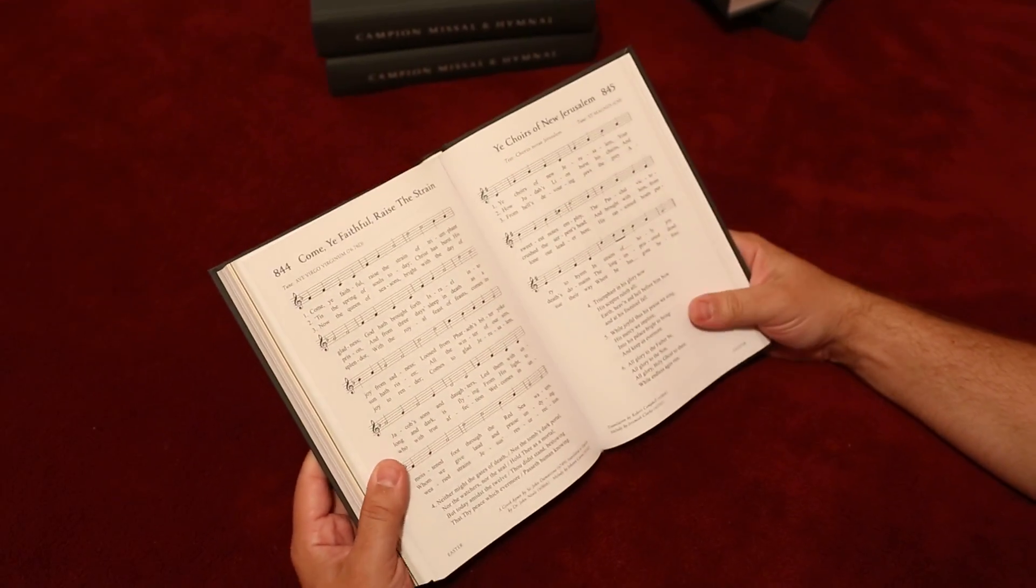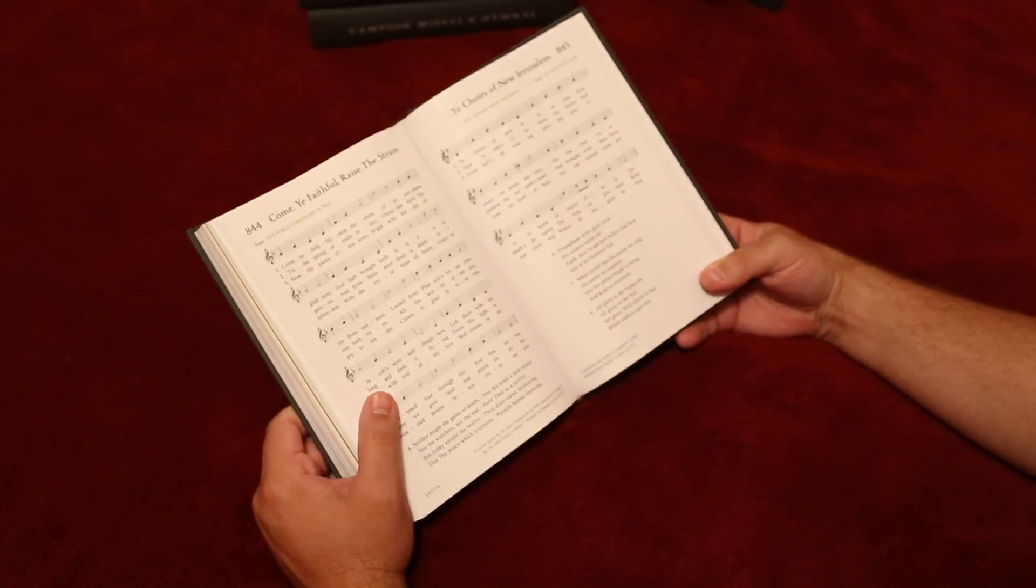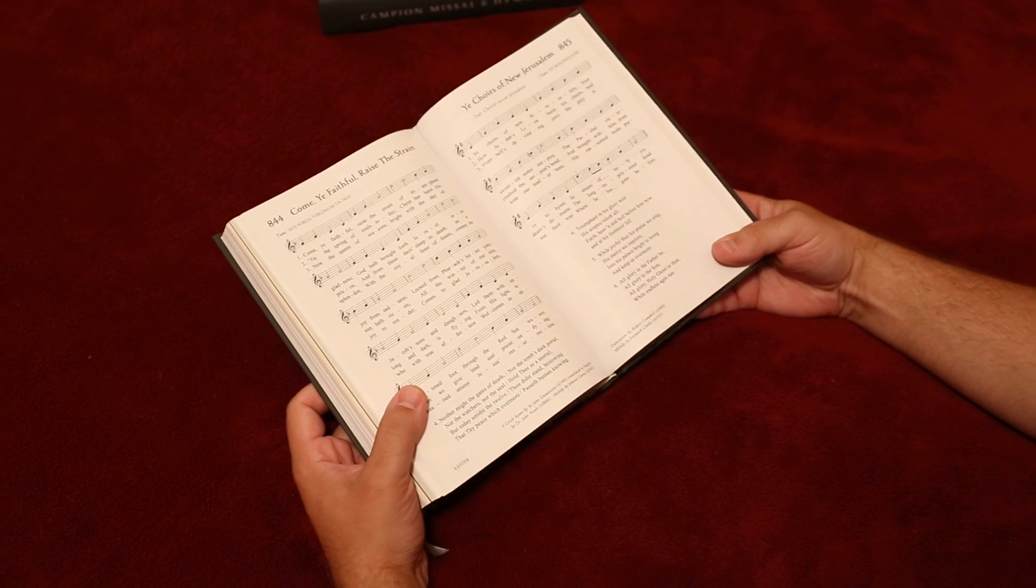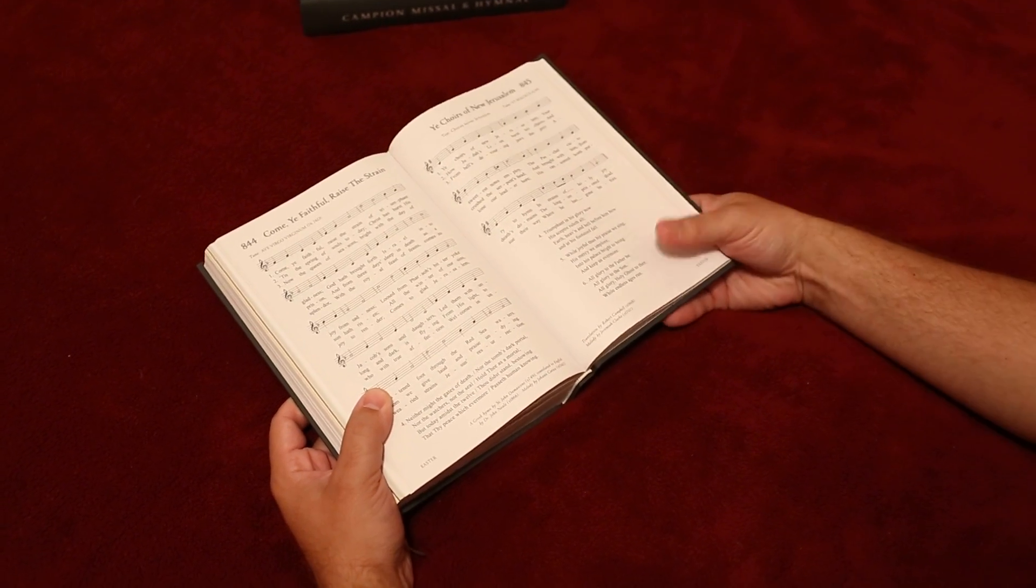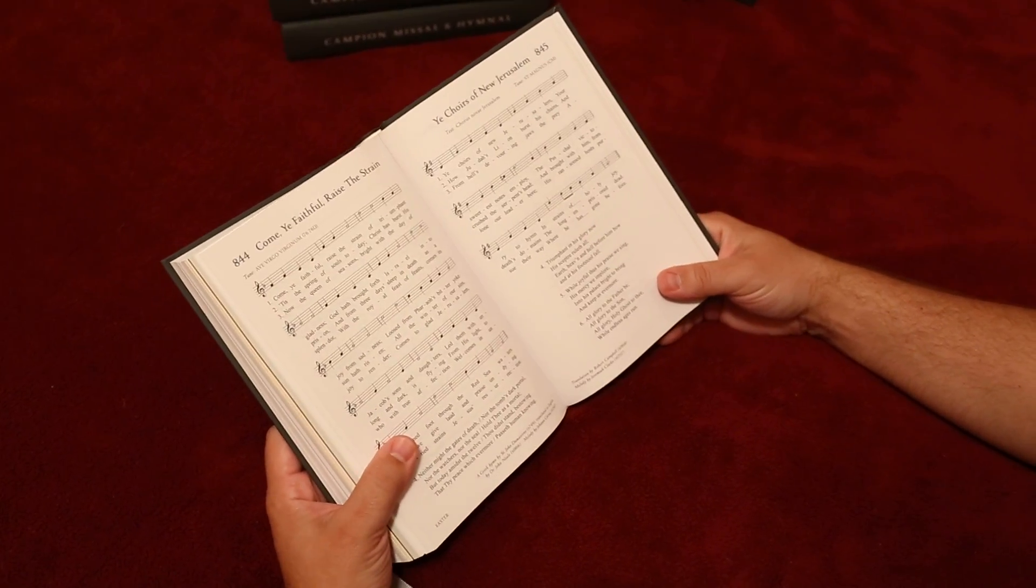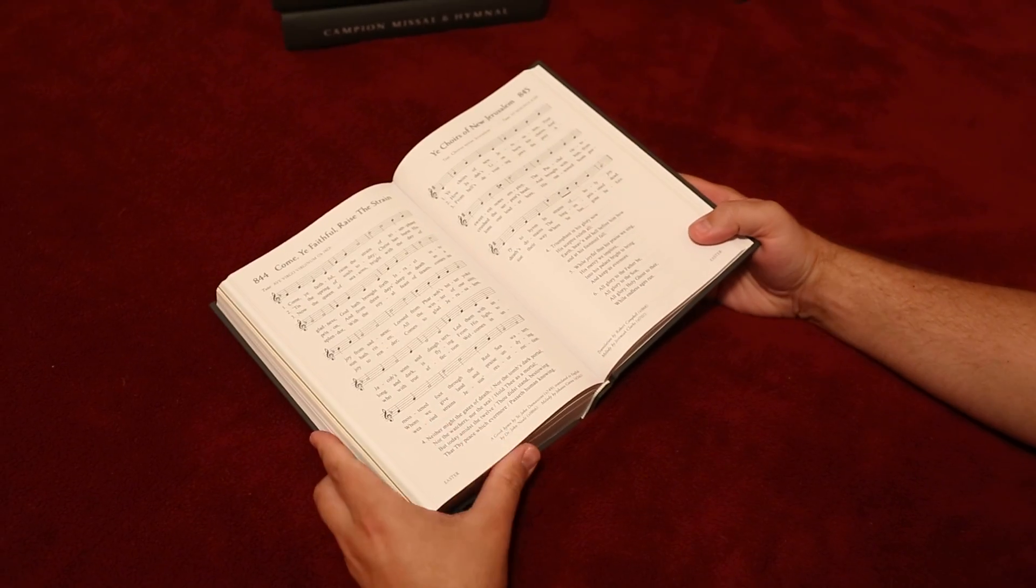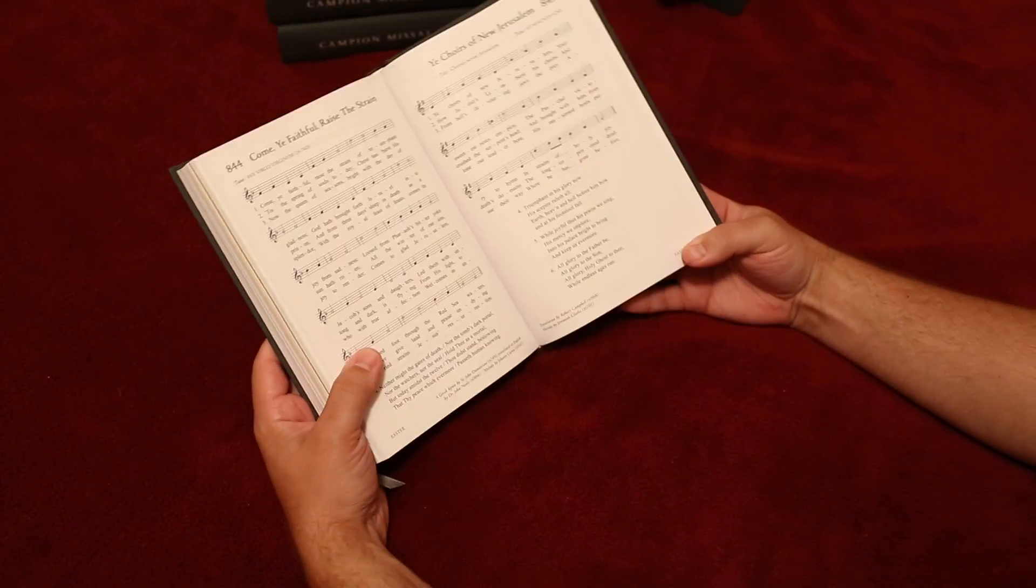So when they call out the number for the ending hymn, you just turn to it and sing it. There's no reason to mark the ending hymn with a ribbon or a holy card because, first of all, they'll probably change it anyway. Musicians tend to often do spur-of-the-moment changes. But more importantly, it's the end of Mass, so all you have to do is turn to the number. And there you go.